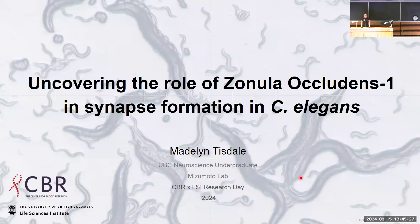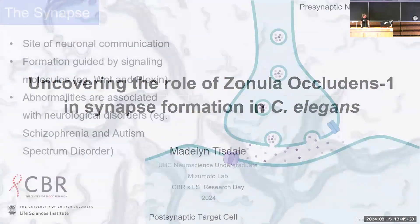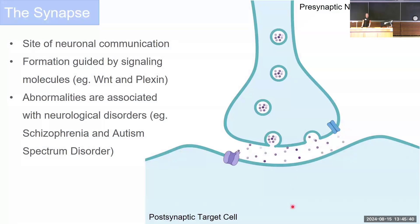My name is Madeline. I've been working at the Mizumoto lab this summer, and today I want to tell you about my project: uncovering the role of Zonula Occludens 1 in synapse formation in C. elegans. Our brains are formed of billions of neurons, and each connects and communicates to the next through a unit called a synapse. The formation of these synapses is regulated by signaling molecules such as Wnt and plexin signaling during development. Abnormalities in their formation are associated with neurological disorders such as schizophrenia and autism spectrum disorder.